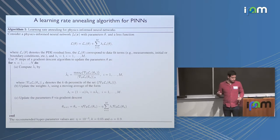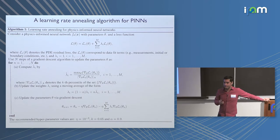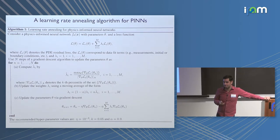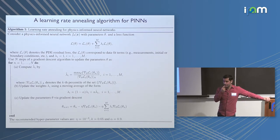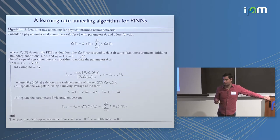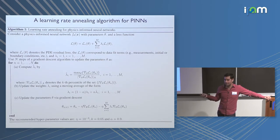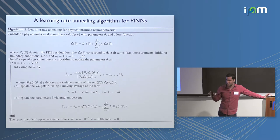A question raised: unlike fixing a static scale, this scheme means no matter how small a loss term gets, it will continually be up-weighted so terms always appear balanced. The response: yes, that's the goal in this setting — you want to keep boundary conditions and residual balanced during optimization. However, if your data is noisy, such a scheme may encourage overfitting. If your data is noiseless and you know the boundaries are exact, this will try to balance things for you.